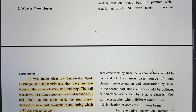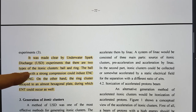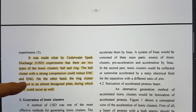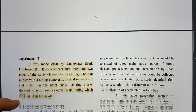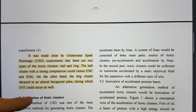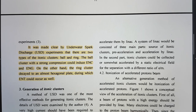It was made clear by underwater spark discharge experiments that there are two types of atomic clusters: ball and ring - specifically a sphere and a toroid. This is basically what I came to the conclusion of a couple of years ago, that these are the two forms it essentially takes. The ball cluster with a strong compression could induce electronuclear collapse and electronuclear regeneration. On the other hand, the ring cluster decayed to an almost hexagonal plate during which electronuclear transmutations can occur as well. I have shared many videos of observations in various systems where you get hexagonal and pentagonal shapes forming from these ring clusters decaying.